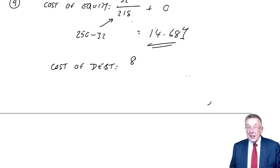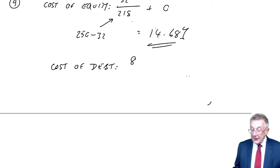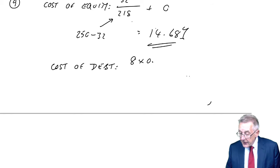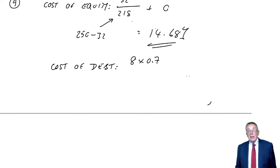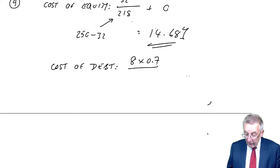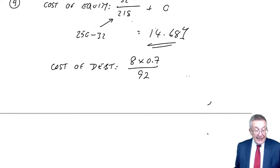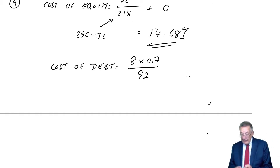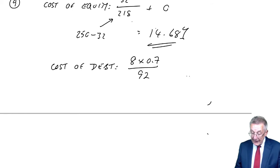We only want the cost of the company, so they're paying interest of 8 a year, but the interest is tax allowable, and the tax rate's 30%. So they're only actually, it's only costing a net 5.6 a year, and a market value of 92, that is ex-interest, which means the cost of debt, 5.6 divided by 92, is 6.09%.